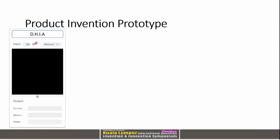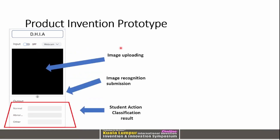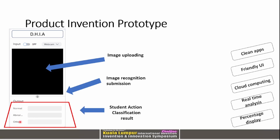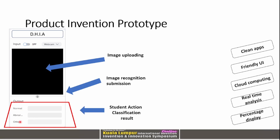This is what our proposed app prototype looks like — we call it DIA. It has a place to upload an image, an image recognition submission button, and it presents the student action classification as either normal, abnormal, or other class. It is a clean, user-friendly app with cloud computing, real-time analysis, and percentage outputs.